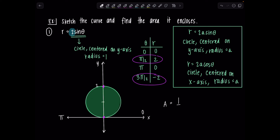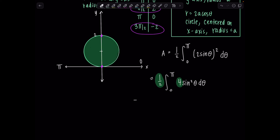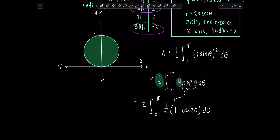The area is one-half, written outside, integral from 0 to pi of (2 sine theta) squared d-theta. Working on this integral: one-half times integral from 0 to pi of 4 sine squared theta d-theta. Taking the 4 outside with the one-half gives 2 times the integral. Anytime you see sine squared, replace it with the half-angle identity: one-half times (1 minus cosine 2-theta) d-theta. The 2 and one-half cancel beautifully.